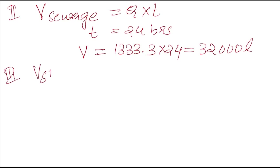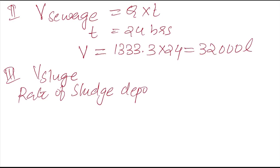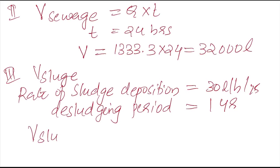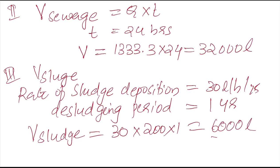The third step is to calculate the volume of sludge. Since the rate of sludge deposition is not given, we assume it as 30 liters per person per year. Also, since the desludging period (cleaning period) is not mentioned, we assume it as one year. From these assumptions, the volume of sludge equals rate of sludge deposition × total population × desludging period = 30 × 200 × 1 = 6,000 liters.